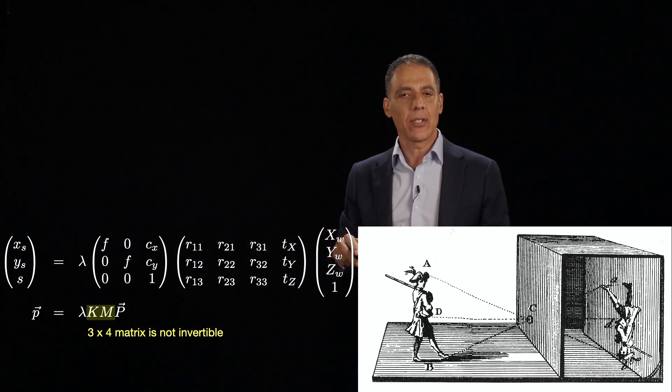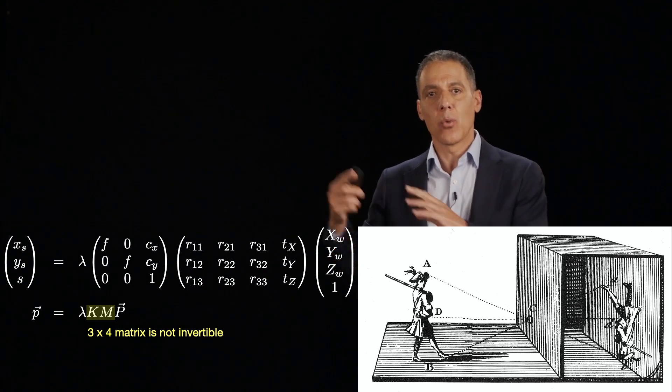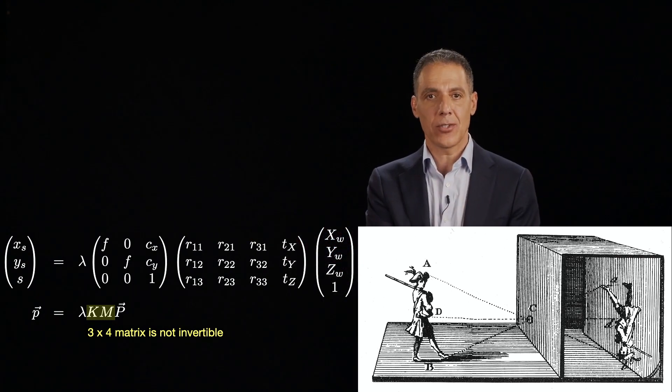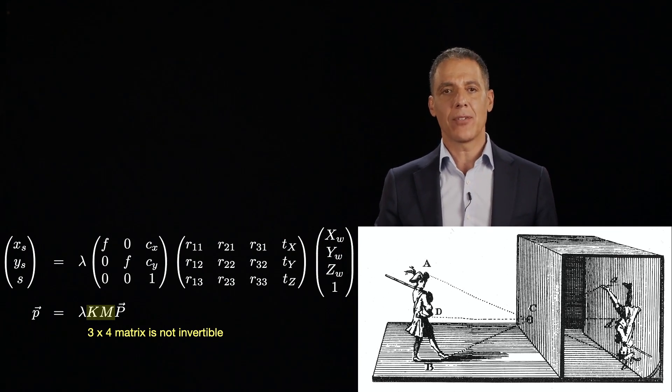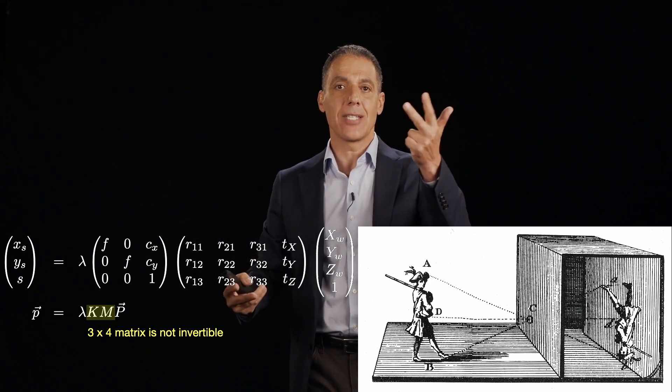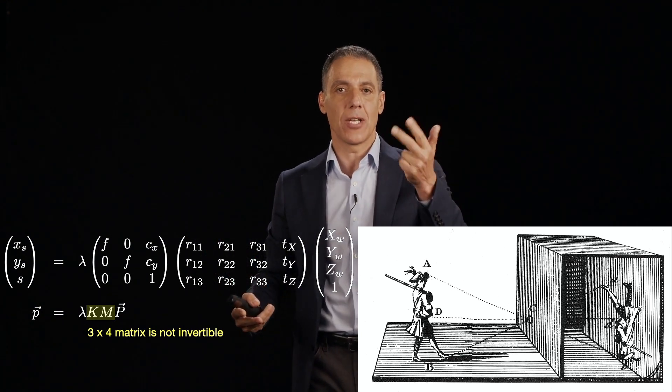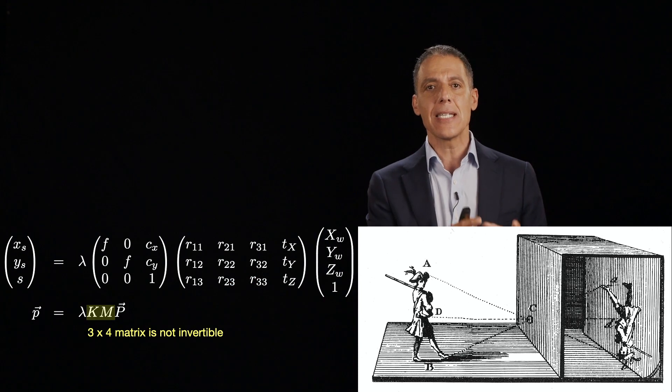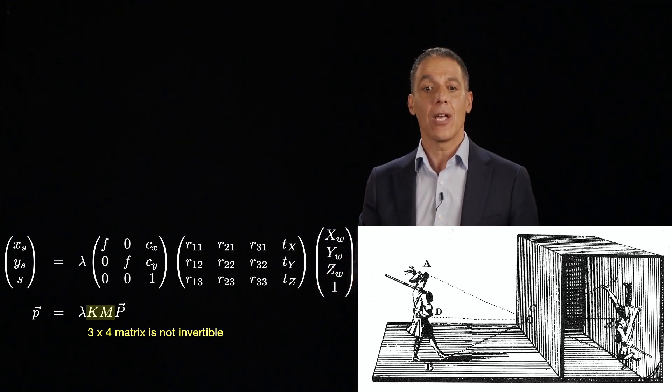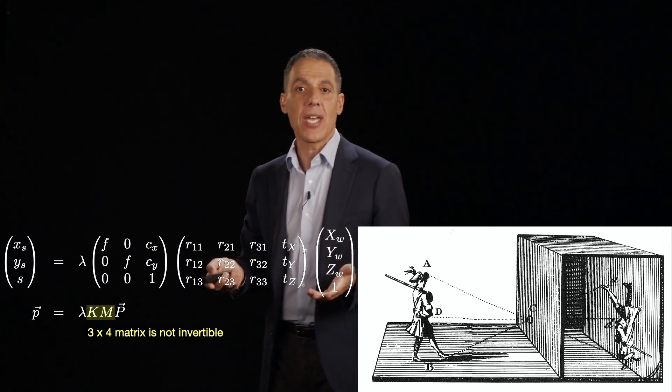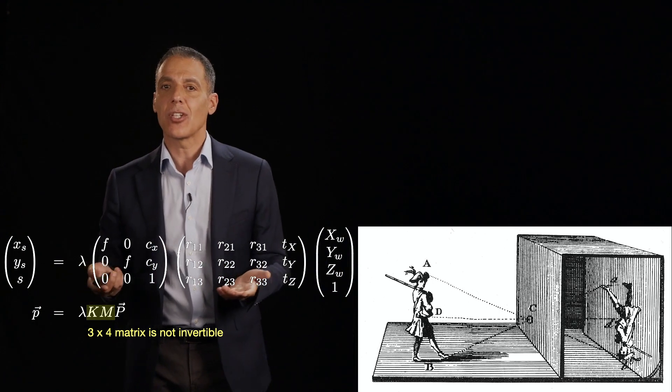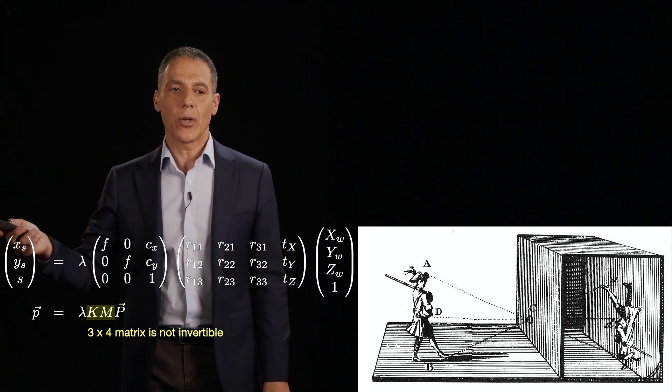Now we have to now generalize this where we have a world coordinate system, a camera coordinate system, and then a sensor coordinate system. So now what we have to do is relate a 3D world coordinate system, xw, yw, zw, to a 3D camera coordinate system, xc, yc, zc, through really the same thing, a rotation and a translation. But now the rotation is just a little bit more involved.